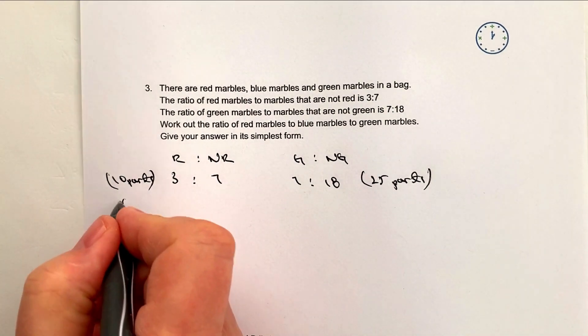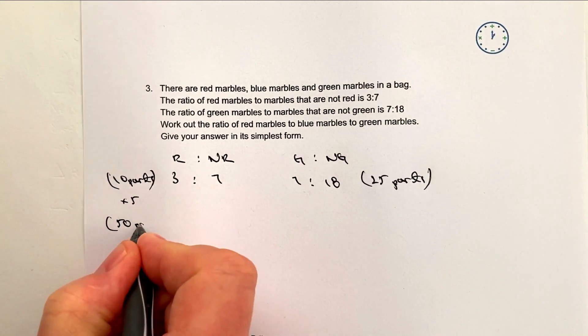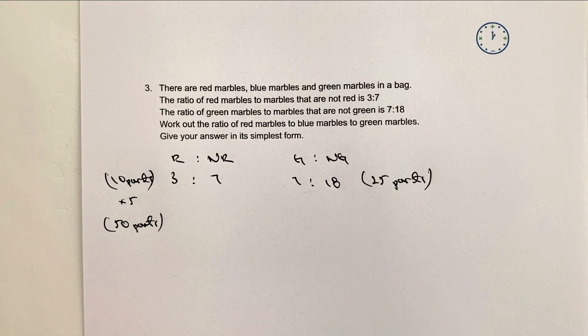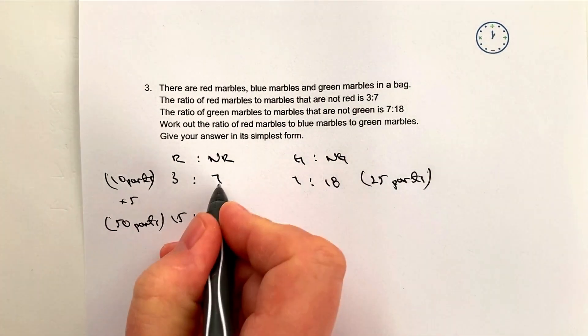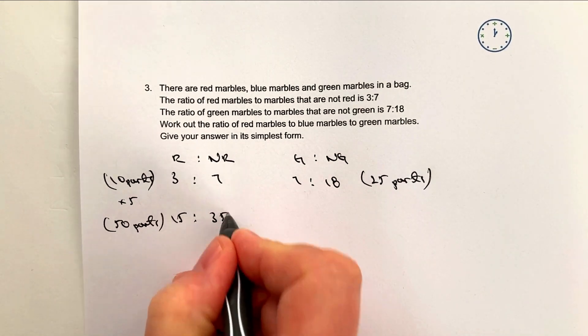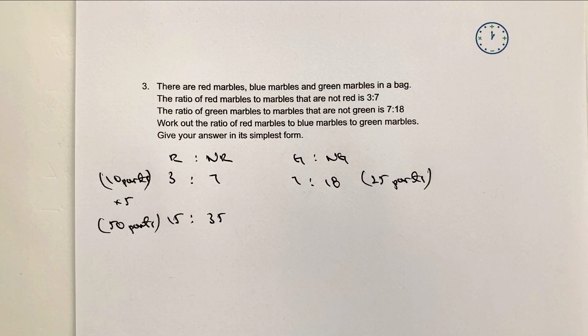So if I multiply each of these by 5, I'm going to get 50 parts. Now if I do that, what it means then is I've got 3 times 5 is 15 and 7 times 5 is 35. So ratio of red to not red is going to be 15 to 35.